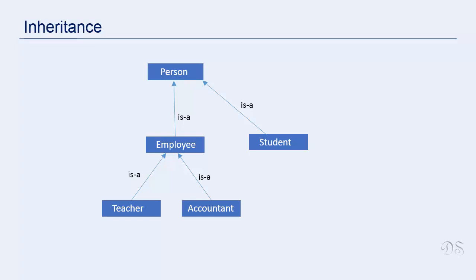This simplifies the design and makes programs easier to understand. So reusability of code and being able to represent the system using a hierarchy of classes are the two main benefits of inheritance. However, you should use inheritance only when there is some natural relationship between classes. Unnecessary use of inheritance can make the system incomprehensible and can create unwanted dependencies between classes.